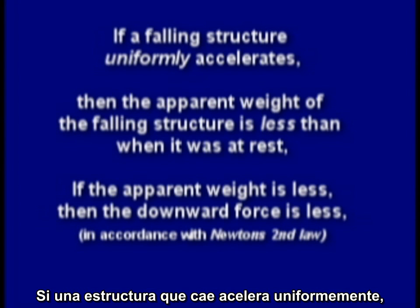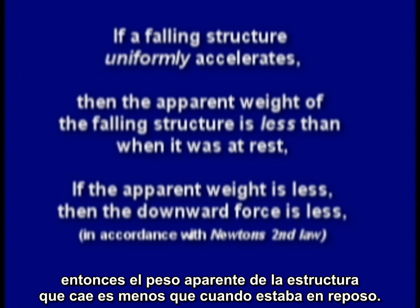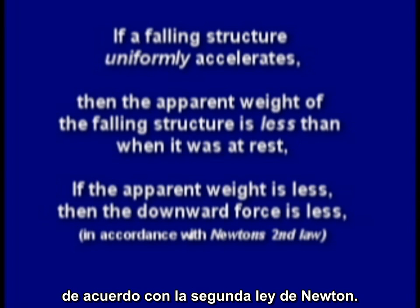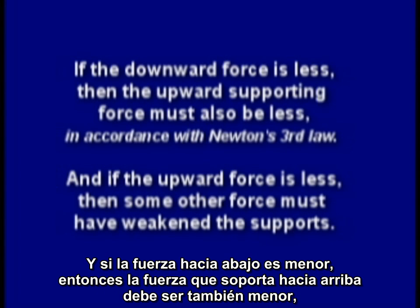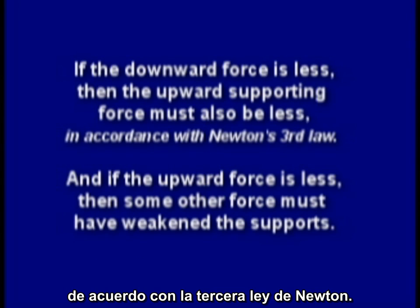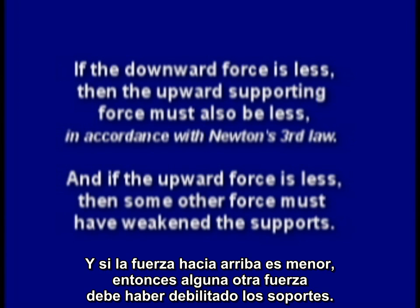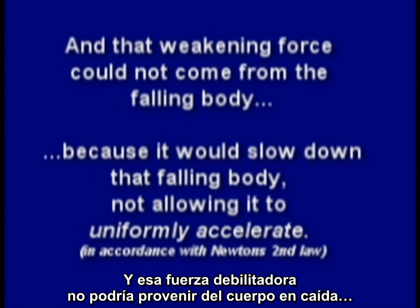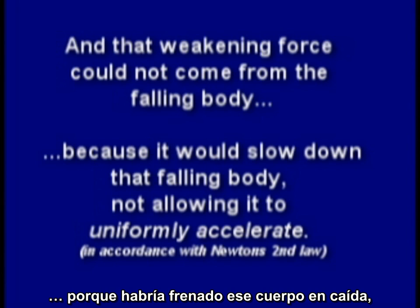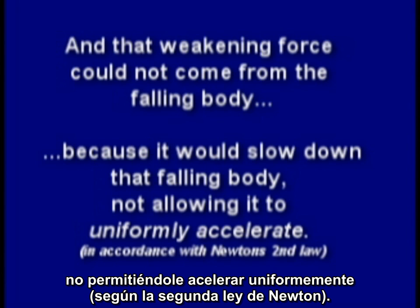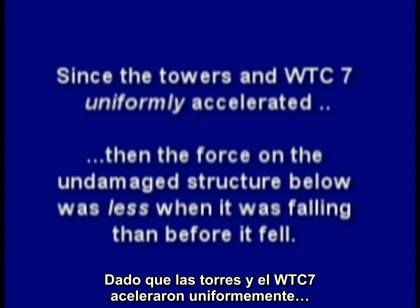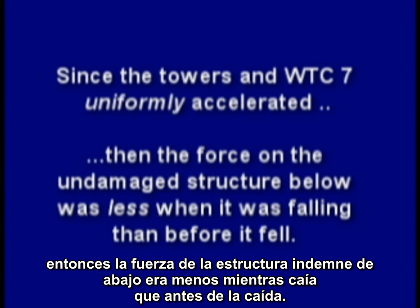If a falling structure uniformly accelerates, then the apparent weight of the falling structure is less than when it was at rest. If the apparent weight is less, then the downward force is less in accordance with Newton's second law. And if the downward force is less, then the upward supporting force must also be less in accordance with Newton's third law. And if the upward force is less, then some other force must have weakened the supports. Since the towers and World Trade Center 7 uniformly accelerated, the force on the undamaged structure below was less when it was falling than before it fell.